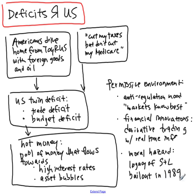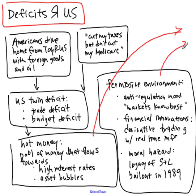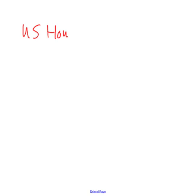Then house prices didn't continue to rise, and the risk of that was not properly taken into account by banks because they were not regulated. They figured that if things went horribly wrong, they would get bailed out like the savings and loans banks did in 1989. So there was what's called a moral hazard — meaning that the risk was not properly priced.